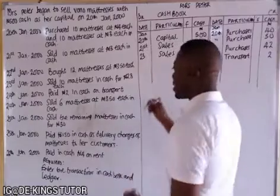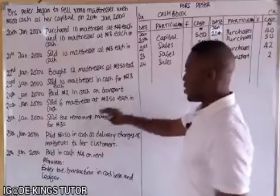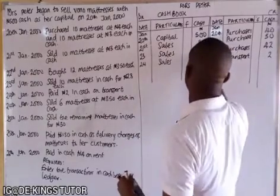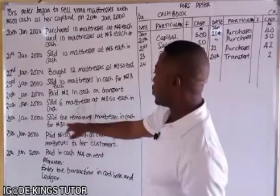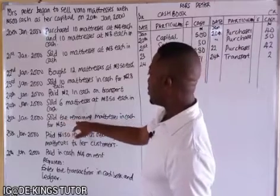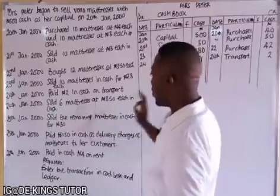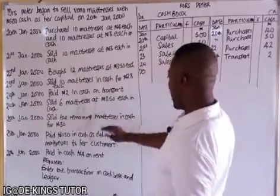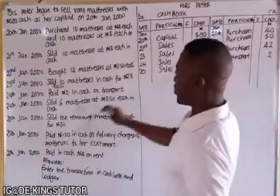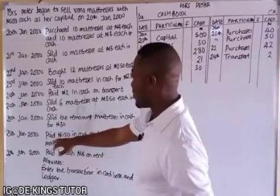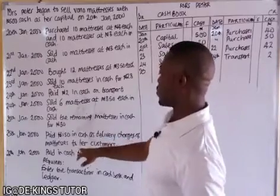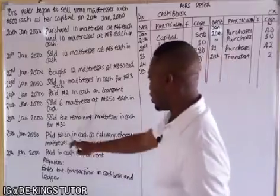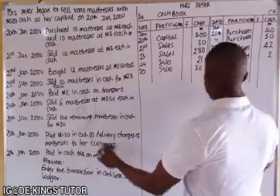On 24th January, she sold 6 mattresses at 3 naira 50 kobo each in cash — that is 21 naira, debited as sales. On 25th January, she sold the remaining mattresses in cash for 30 naira — another sales entry of 30 naira debited. Also on 25th January, she paid 1 naira 50 kobo in cash as delivery charges for mattresses to customers — money is going out, so on the 25th we credit 'delivery charges' for 1.50 naira.